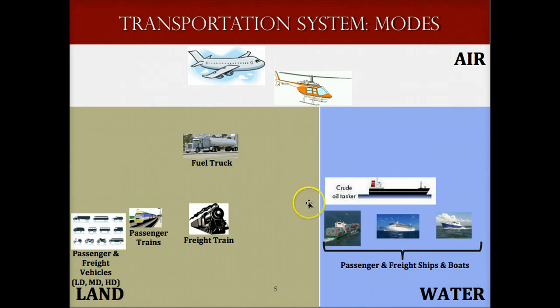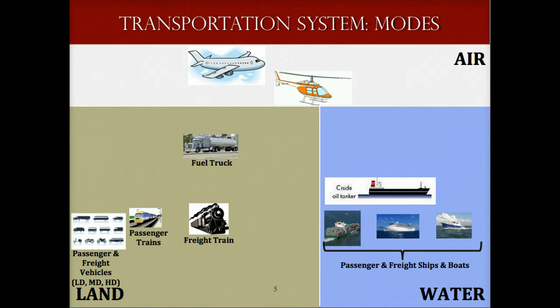Boats, ships, and tankers for passengers and freight. And trucks, trains, cars, and other vehicles for passengers, commercial, and government operations, freight, and fuel. Passenger and freight vehicles can generally be classified into light-duty (LD), medium-duty (MD), and heavy-duty (HD). You will be learning about the different sustainability impacts of these different vehicle classes in Week 9.